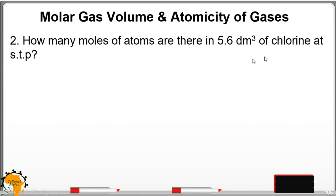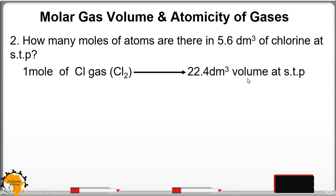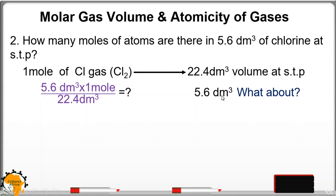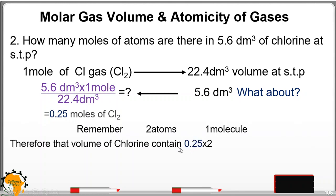How many moles of atoms are there in 5.6 dm³ of chlorine at STP? One mole of chlorine gas occupies that volume of 22.4 dm³ at STP. So what about 5.6? It will have a mole of 0.25 moles of chlorine gas. But we are being asked the number of moles of atoms. These are molecules and we know two atoms make one molecule. You multiply by 2 to get the number of molecules of chlorine atom at 0.5 moles.